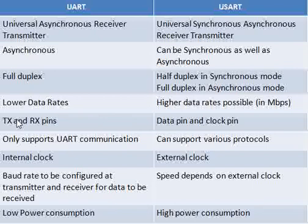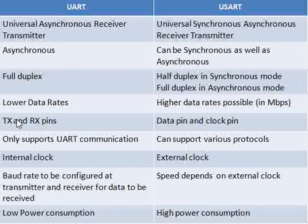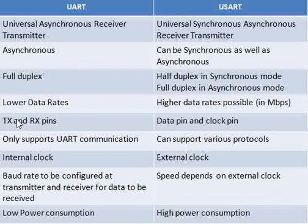As mentioned, UART doesn't have an external clock, but there is an internal clock which decides the baud rate. The receiver also needs to know that baud rate. So when two devices are communicating over UART, because there is no external clock, both ports must be configured at a fixed baud rate beforehand for them to communicate. Whereas with USART you need not configure them for a common rate because you have a clock, and based on the rate at which data is coming in, the receiver can read it accordingly. So the receiving device need not know the frequency of operation in advance.